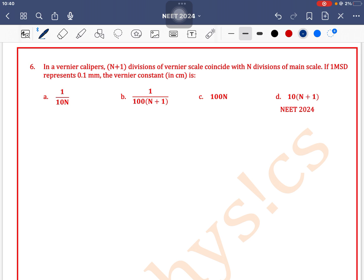In a vernier caliper, N+1 divisions of vernier scale coincide with N divisions of main scale. If 1 MSD represents 0.1 mm, the vernier constant is. So we know that vernier constant means least count.